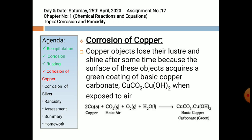Corrosion of Copper: Copper objects lose their luster and shine after some time because the surface acquires a green coating of basic copper carbonate, with chemical formula CuCO₃·Cu(OH)₂, when exposed to air. When copper reacts with carbon dioxide, oxygen, and water vapors — collectively called moist air — it produces copper carbonate, which is green in color.